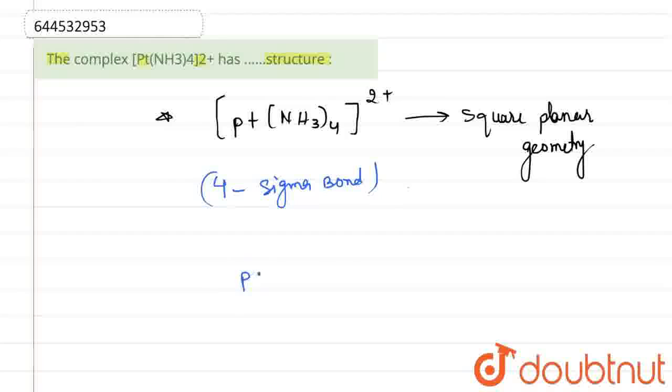If we draw its structure, we have Pt in the center, then NH3, again NH3, and similarly NH3 and NH3. This makes a square planar geometry with a 2+ charge.